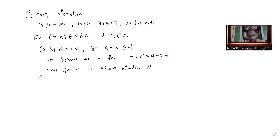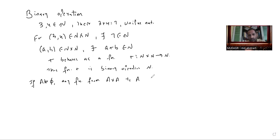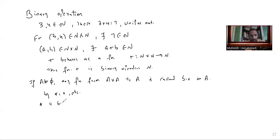To formally define: if A is any non-empty set, then any function from the cross product A×A to A is called a binary operation. We generally denote binary operations by star (★), circle (∘), etc. So when we say ★ is a binary operation on a non-empty set A, it means ★ is a function from A×A to A.